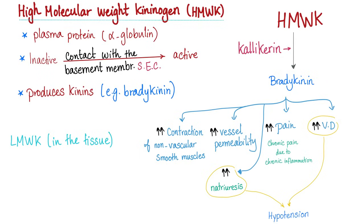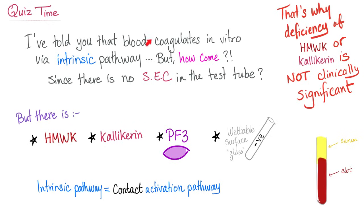What are the functions of bradykinin? It causes vasodilation. It mediates pain and natriuresis. It increases vessel permeability, and it increases contraction of non-vascular smooth muscles such as your bronchi. In the tissue, you have the tissue low molecular weight kininogen becoming calidin. In the plasma, you have the high molecular weight kininogen becoming bradykinin — so kininogen becomes bradykinin.